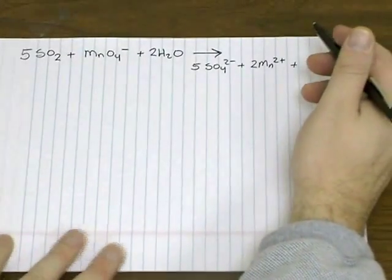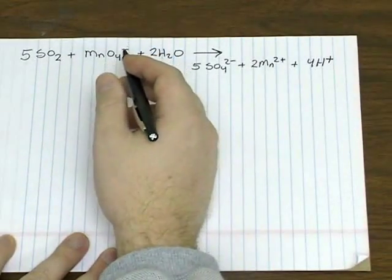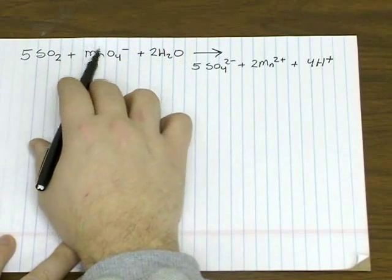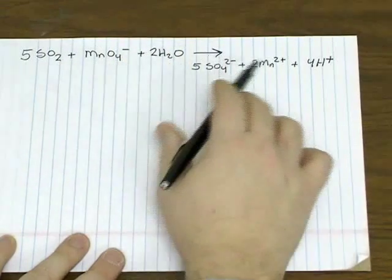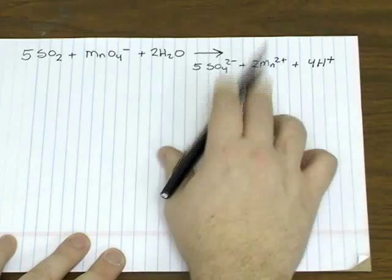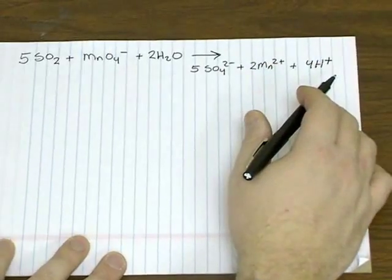So let's look at one last example. Here we'll look at the reaction of sulfur dioxide and permanganate ion and water to give you sulfate, manganese ion, and hydrogen ion.